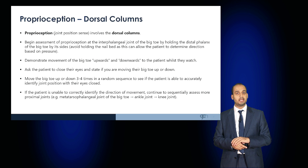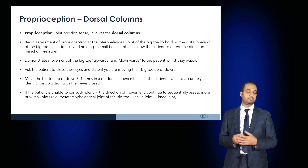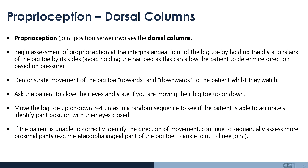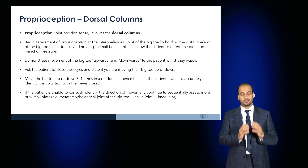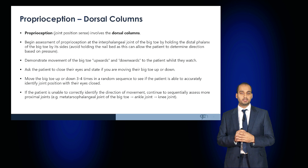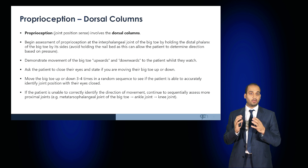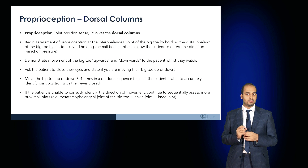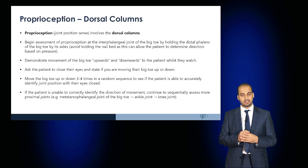Another way to test the dorsal columns is through proprioception or joint position sensing. Begin by assessing proprioception at the interphalangeal joint of the big toe by holding the distal phalanx by its sides and moving the toe up and down. Ask the patient to close their eyes and correctly identify whether the big toe is moving upwards or downwards. If they cannot accurately sense joint position, sequentially assess more proximal joints — the metatarsophalangeal joint, the ankle, the knee and the hip.